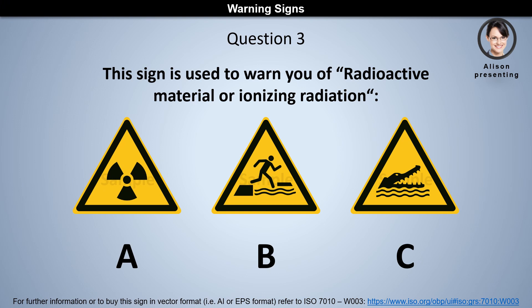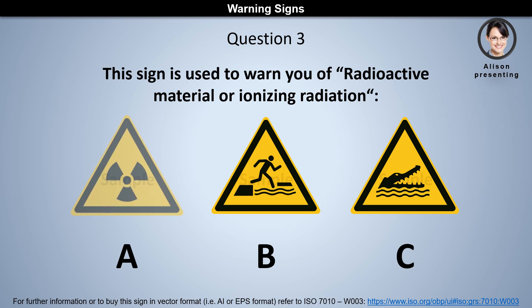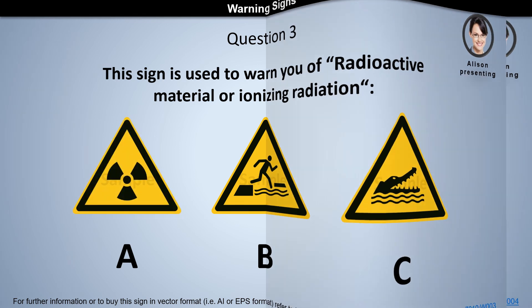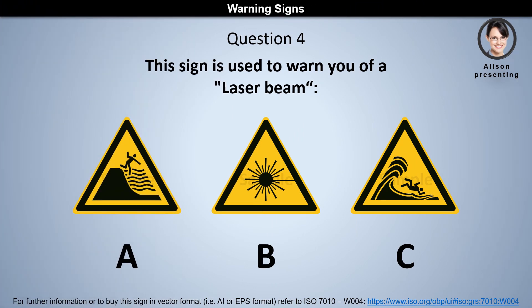Question 3: This sign is used to warn you of radioactive material or ionizing radiation. Is it a, b, or c? The answer is a.